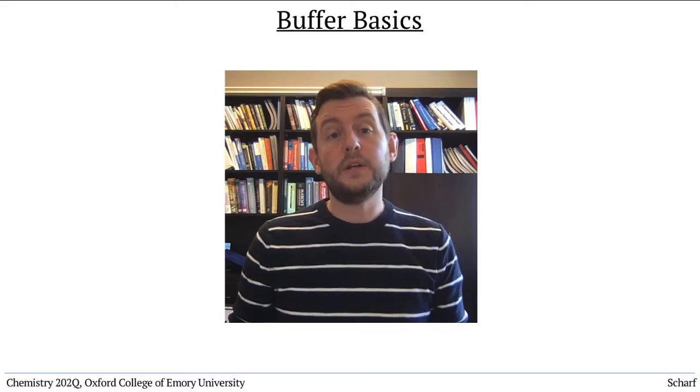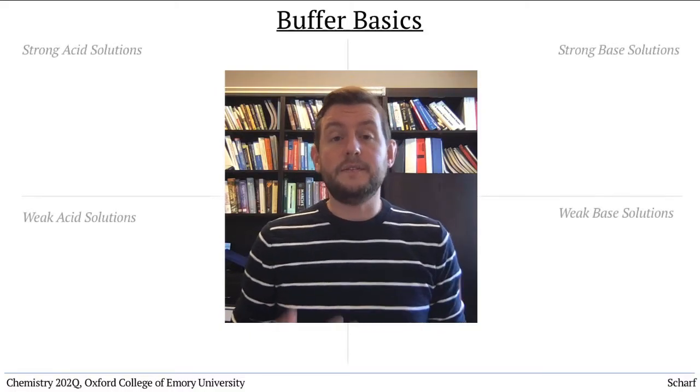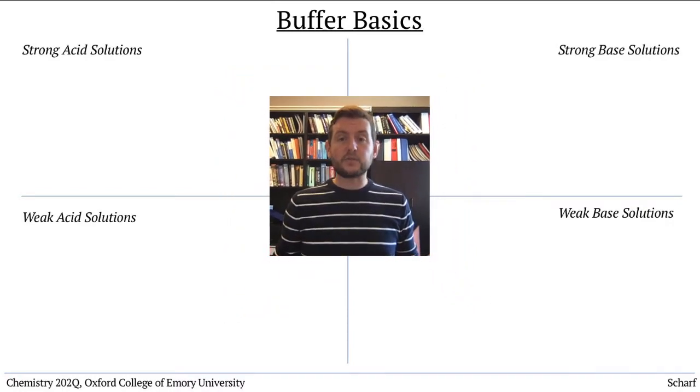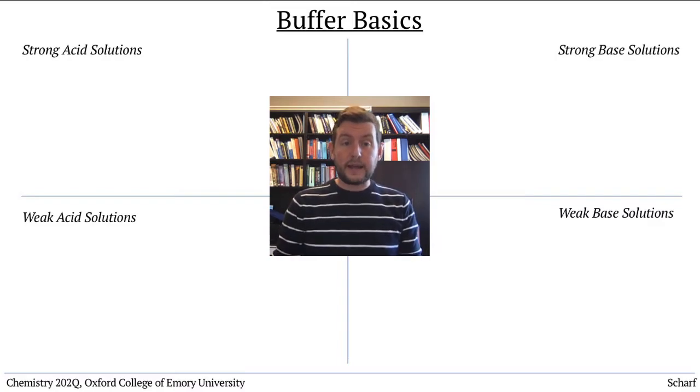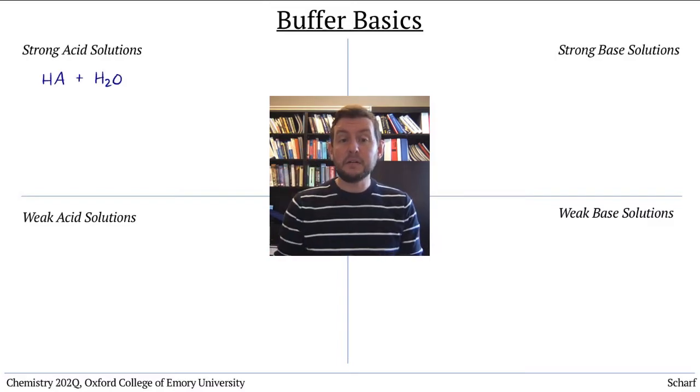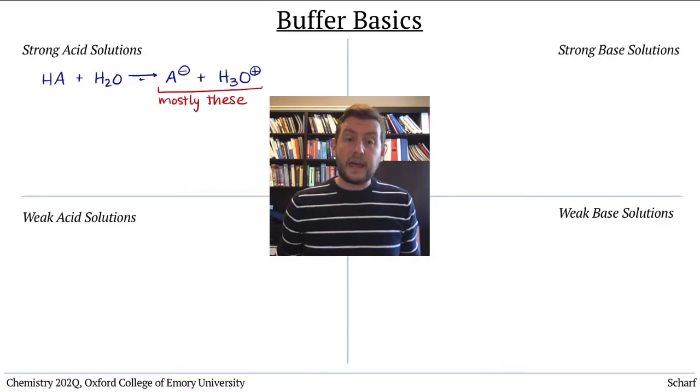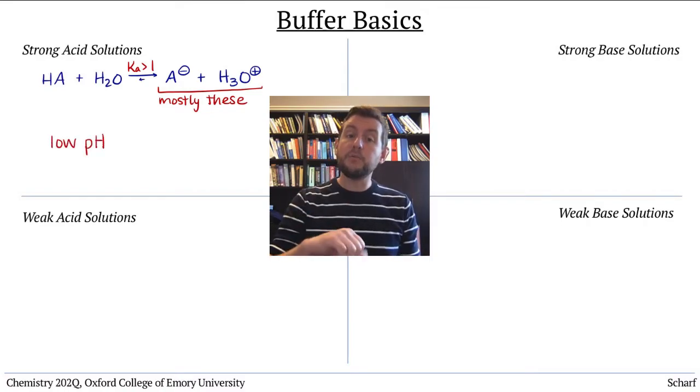Up to this point, we've explored solutions of strong acids or bases and weak acids or bases. Solutions made from strong acids are primarily just solutions of their conjugate bases, A- and H3O+, since their Ka values are large. Since the conjugate bases of strong acids are very weak, the pH of these solutions are very low, very acidic.